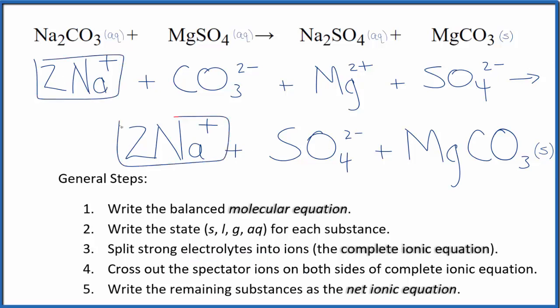In the reactants, two sodium ions. We can cross those out. They're spectator ions. And then we have a sulfate ion here. And in the products, cross it out, spectator ions.